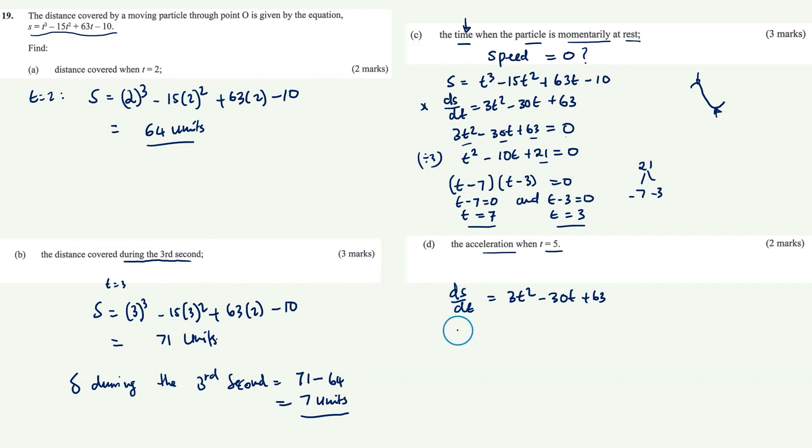If we differentiate this with respect to time, the second differentiation, we get d²s/dt², which is acceleration. Differentiating 3t squared gives 6t, and minus 30t gives minus 30. When t equals 5, a equals 6 times 5 minus 30, which equals 0.